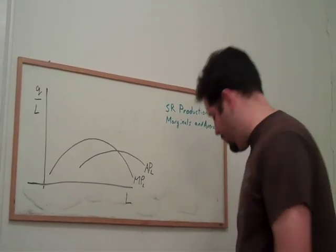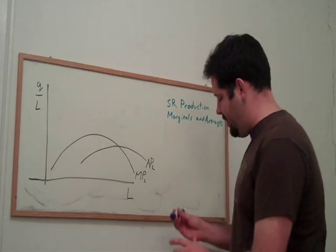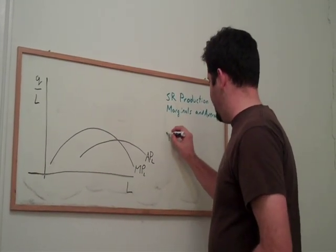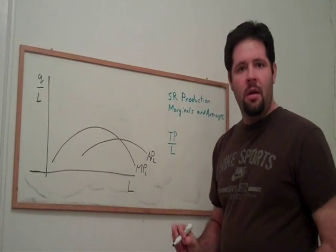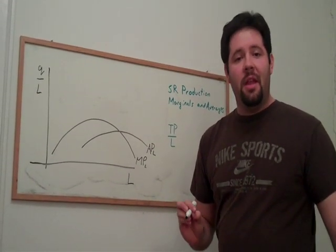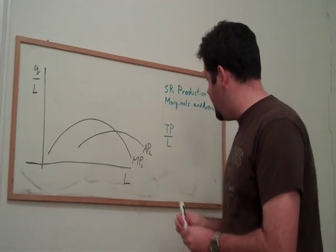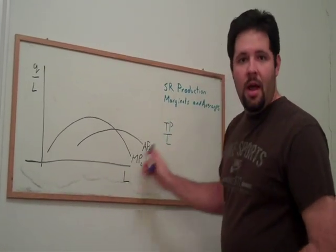So, what does that mean for average product? Average product, if we just think of total product as TP, average product is TP divided by the number of labor inputs. On average, how much does the labor actually provide?